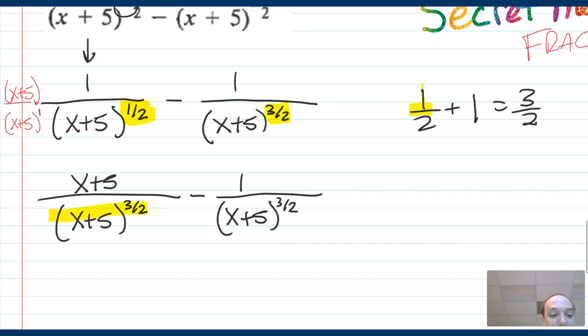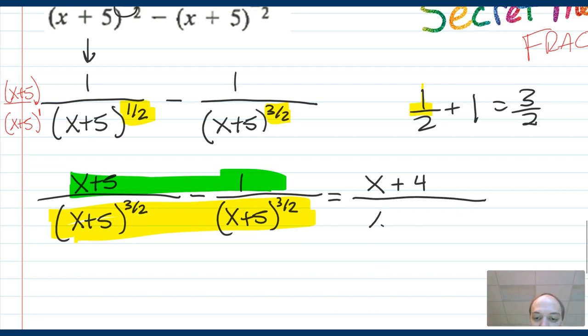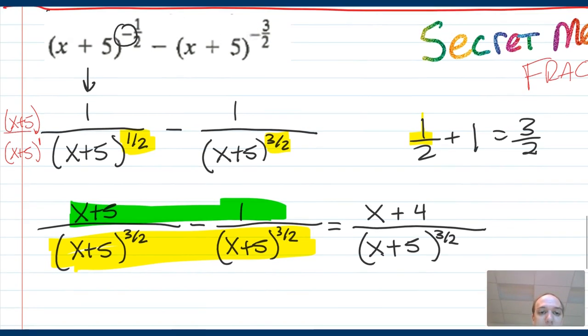Now that I have like denominators, everything's the same in the denominators. You can add, or in this case, subtract the numerator. So I'm going to do x plus five minus one, and I will get x plus four divided by x plus five to the three over two, which was the answer from before. So that's one way to do this problem in maybe a more efficient way if you're comfortable with fractions. You're always allowed to do it in this way. It's just a different interpretation of those negative exponents. We end with the same answer.